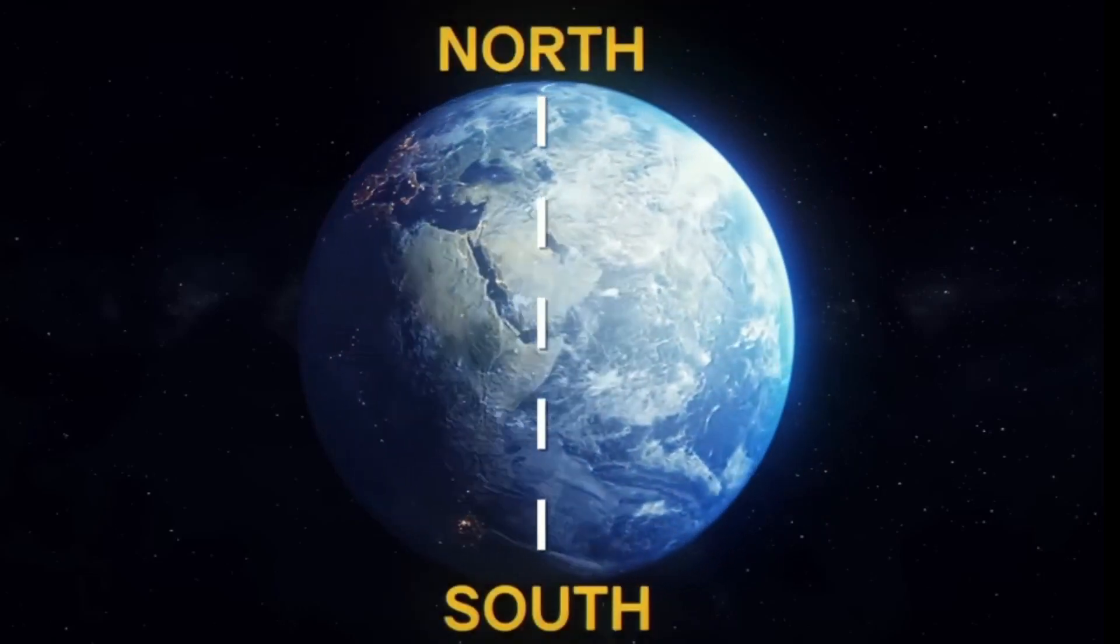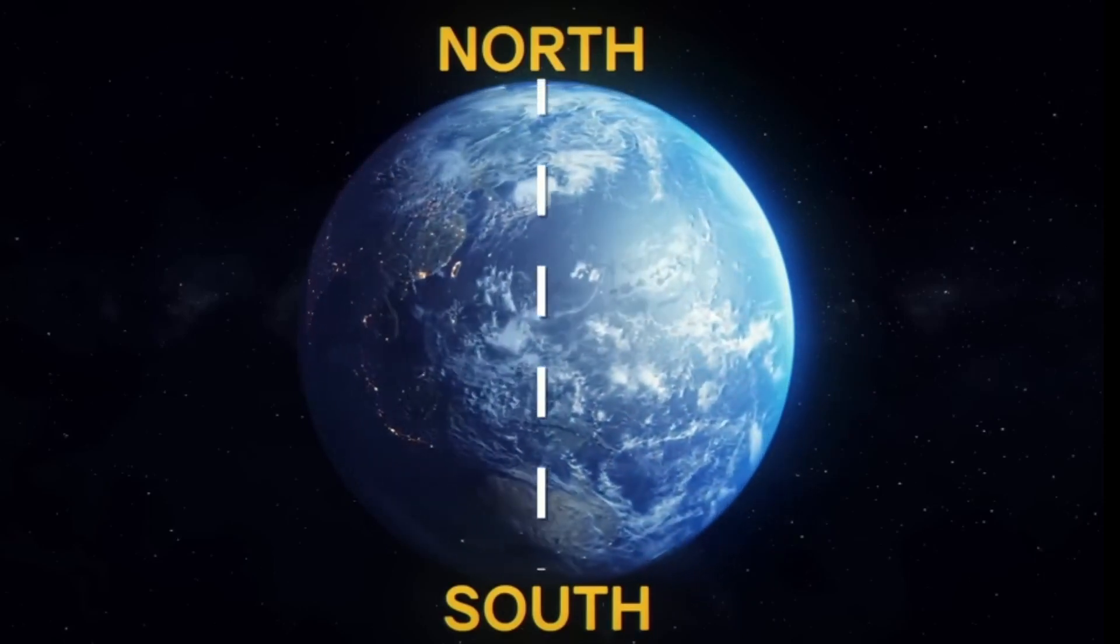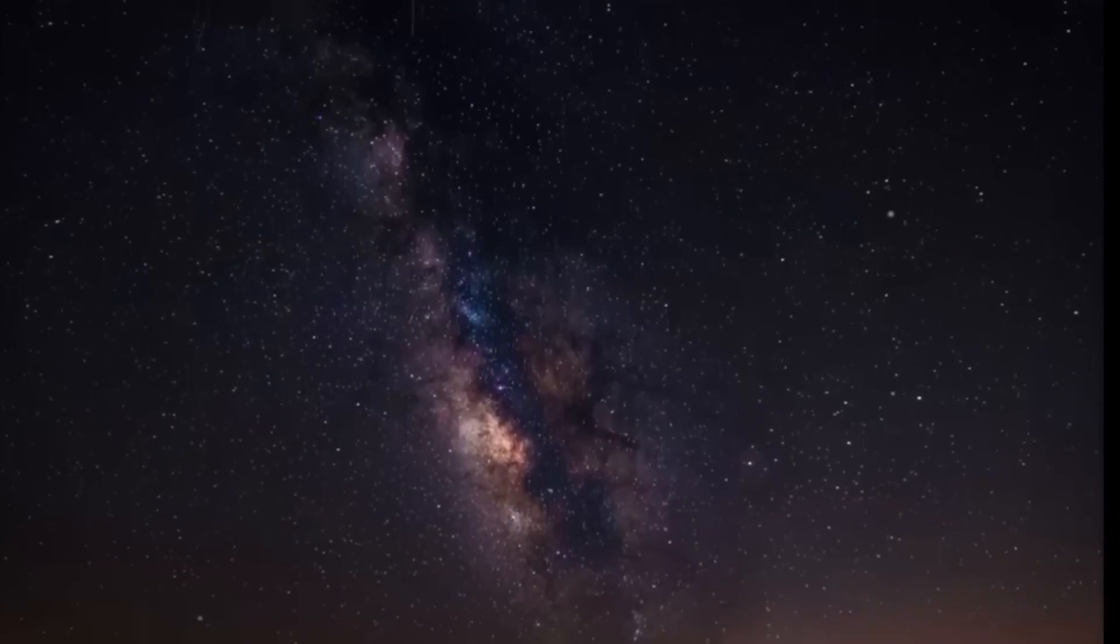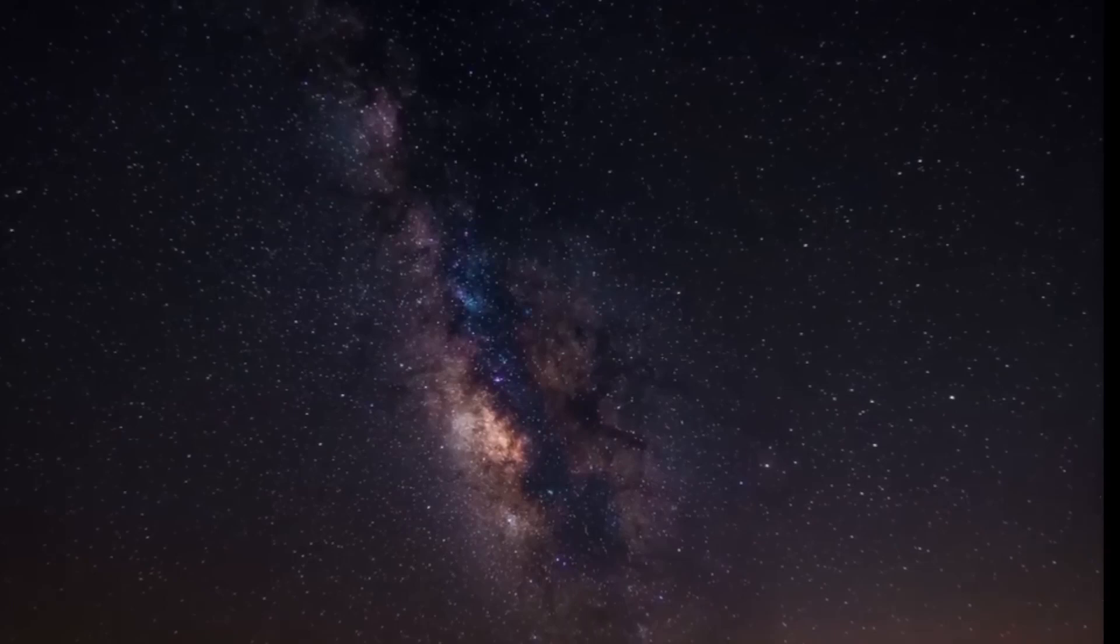Our planet's center of rotation is the axis connecting the north and south poles. For a basketball player spinning a ball on his finger, the center of rotation is the point of his finger's contact with the ball.